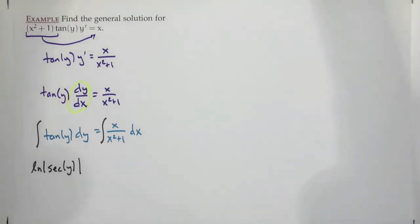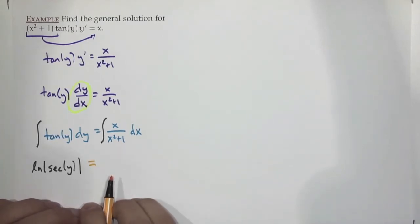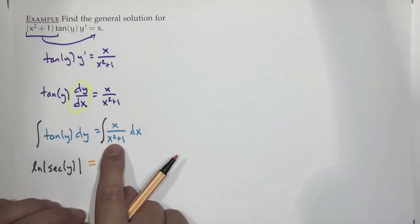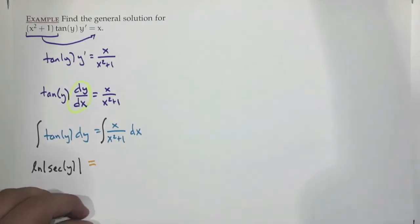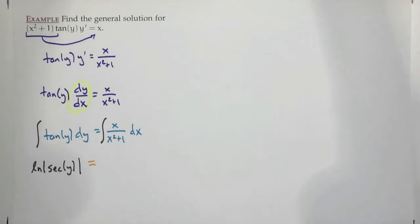For the other side: the integral of x/(x²+1). That one's not on the formula sheet, but we can integrate it. A few people are saying arctangent, but it's not arctangent — the x upstairs throws a wrench in that. A u-substitution works. Let u = x²+1, then du = 2x dx, so (1/2)du = x dx.